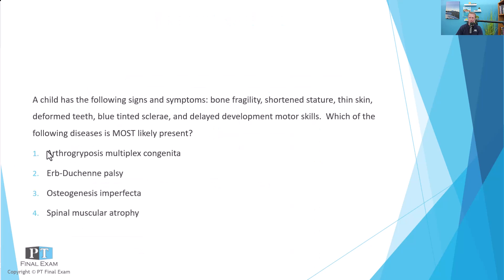Let's go ahead and dive into our practice question for today — a good system interactions type question. A child has the following signs and symptoms: bone fragility, shortened stature, thin skin, deformed teeth, blue tinted sclerae, and delayed developmental motor skills. Which of the following diseases is most likely present?